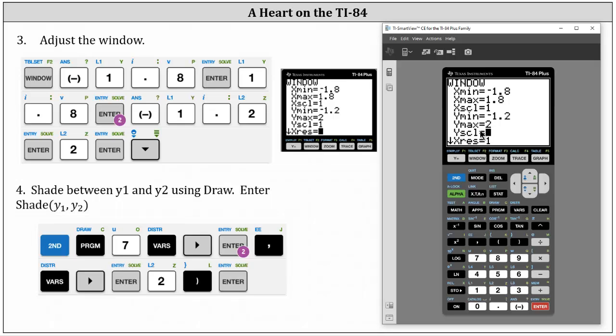The last step is to shade between y1 and y2 using draw. To do this, press second, program. Select option seven.